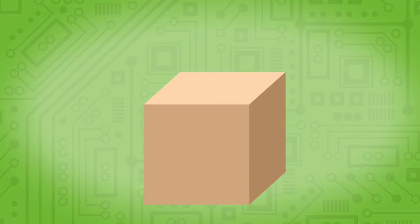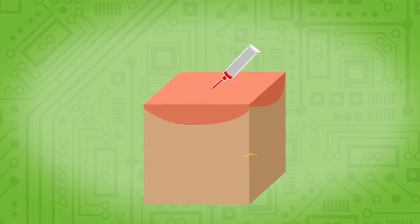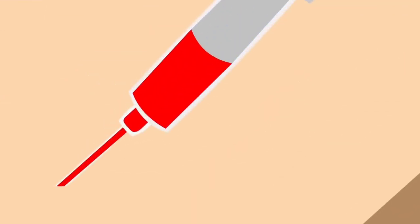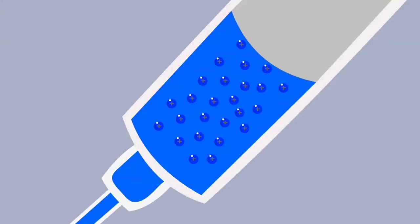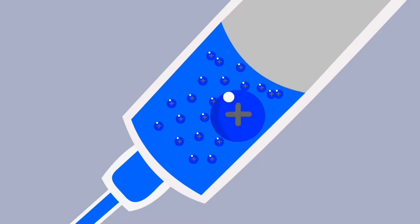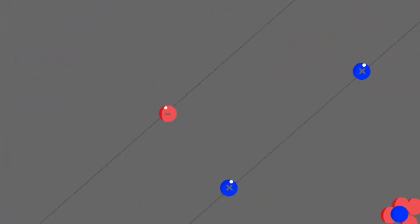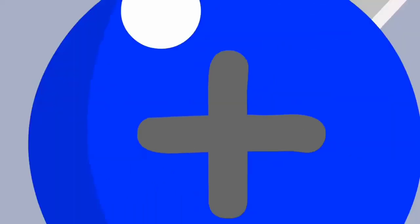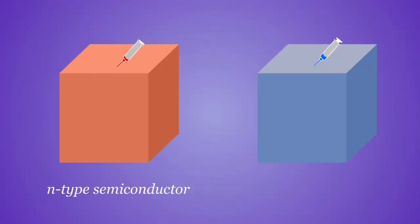A semiconductor normally conducts at high temperature, but we can also make it conduct by injecting it with impurities. This is called doping, and is done — just like in sports — to improve performance. A semiconductor is either doped with an atom that carries an extra electron, or with an atom that is deprived of an electron. The vacancies left by migrated electrons are called holes and are considered positive charges. The former becomes an N-type semiconductor, while the latter becomes a P-type semiconductor.